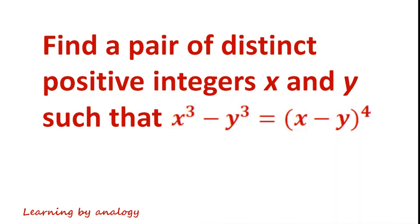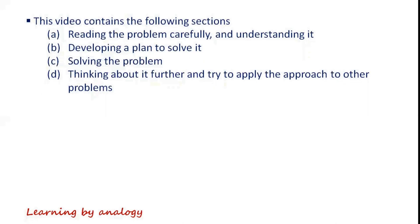Find a pair of distinct positive integers x and y such that x cubed minus y cubed equals (x minus y) all to the power of 4. This video contains the following sections.